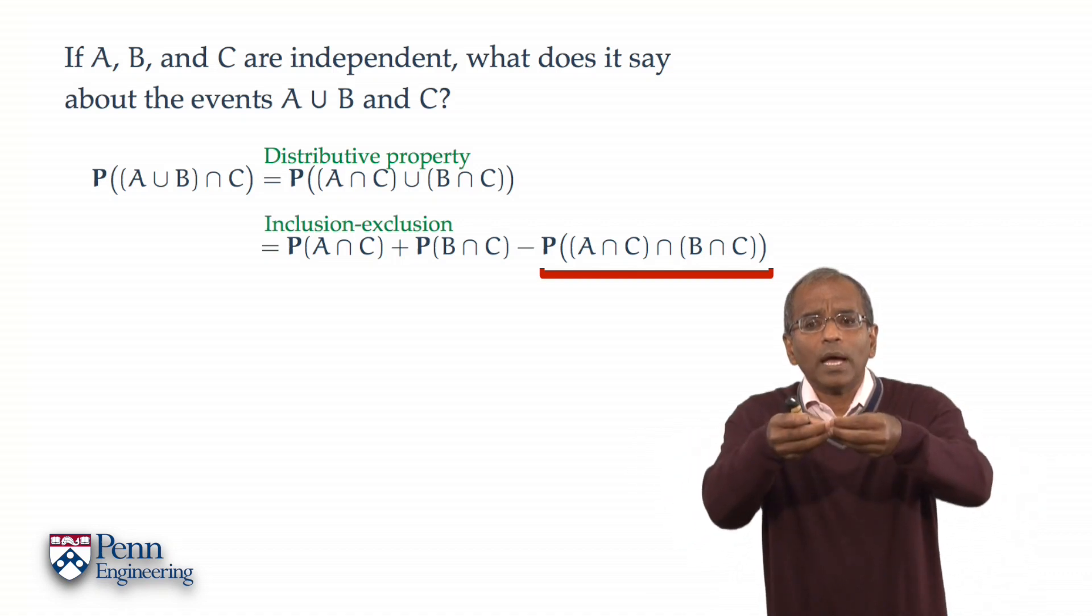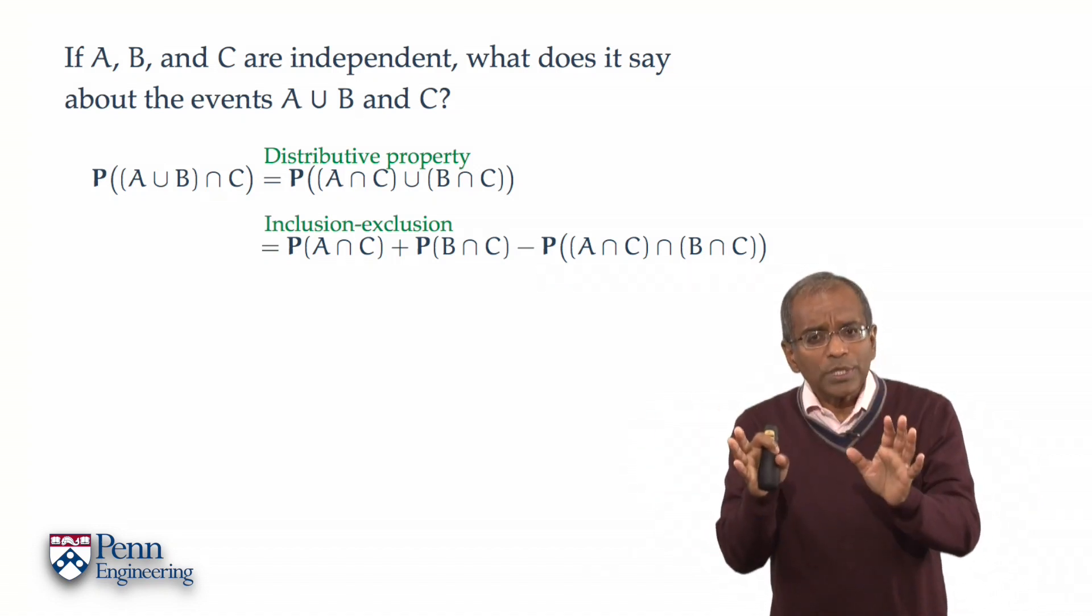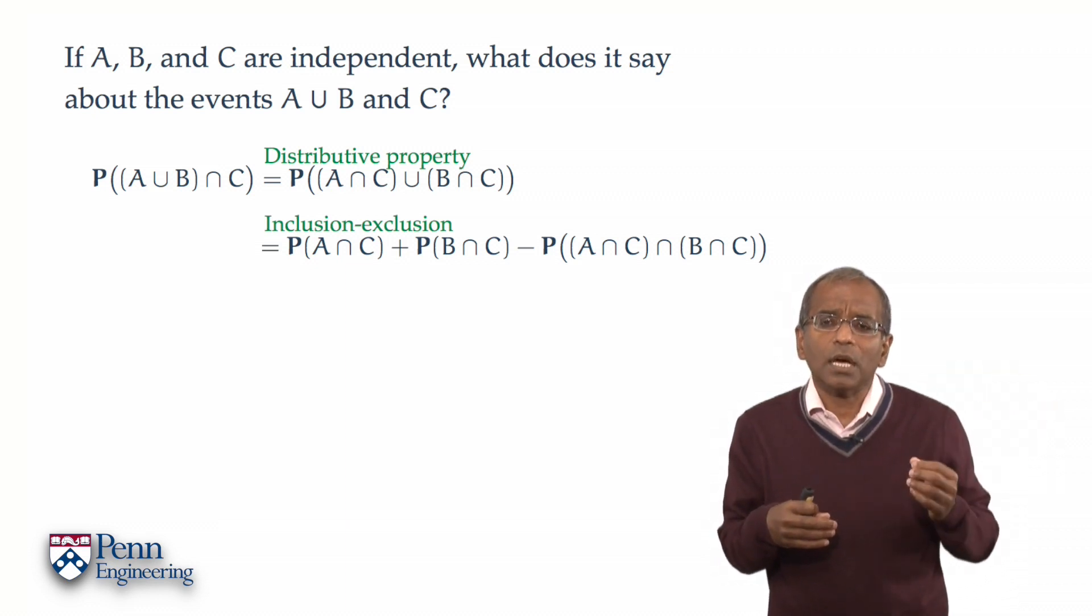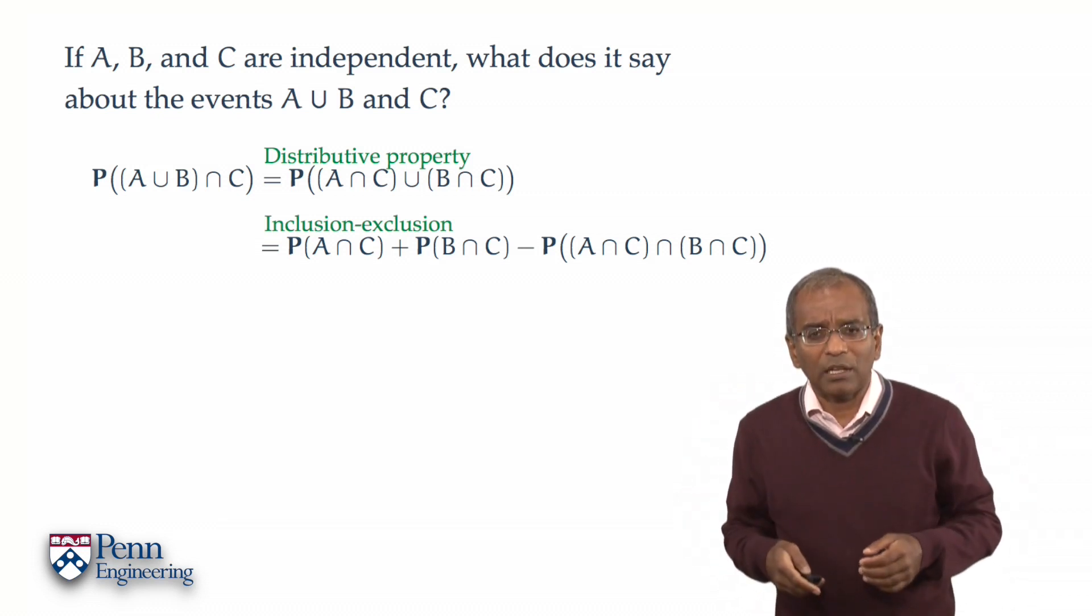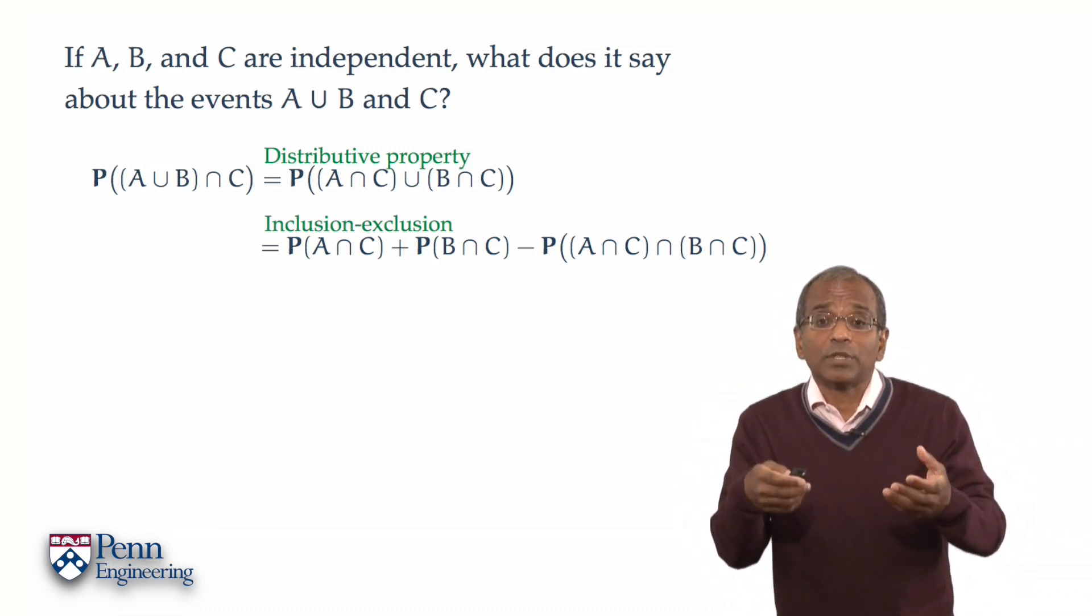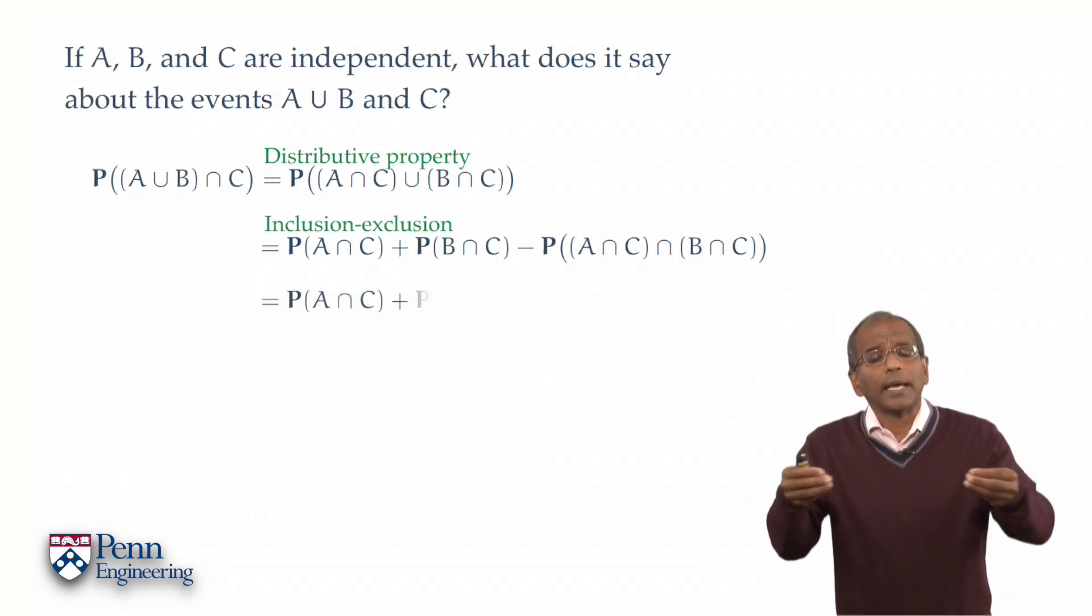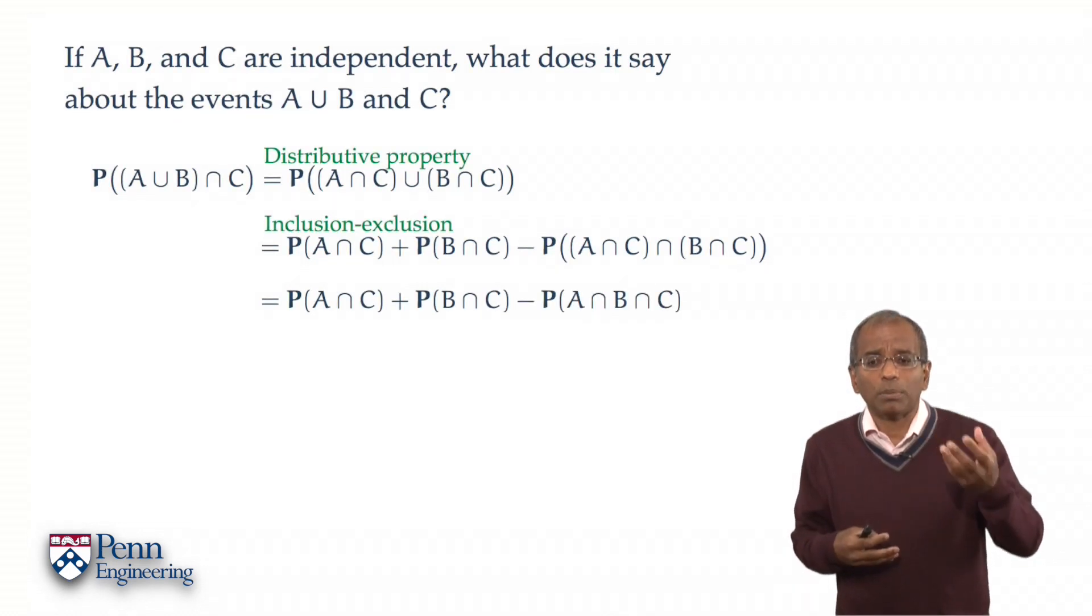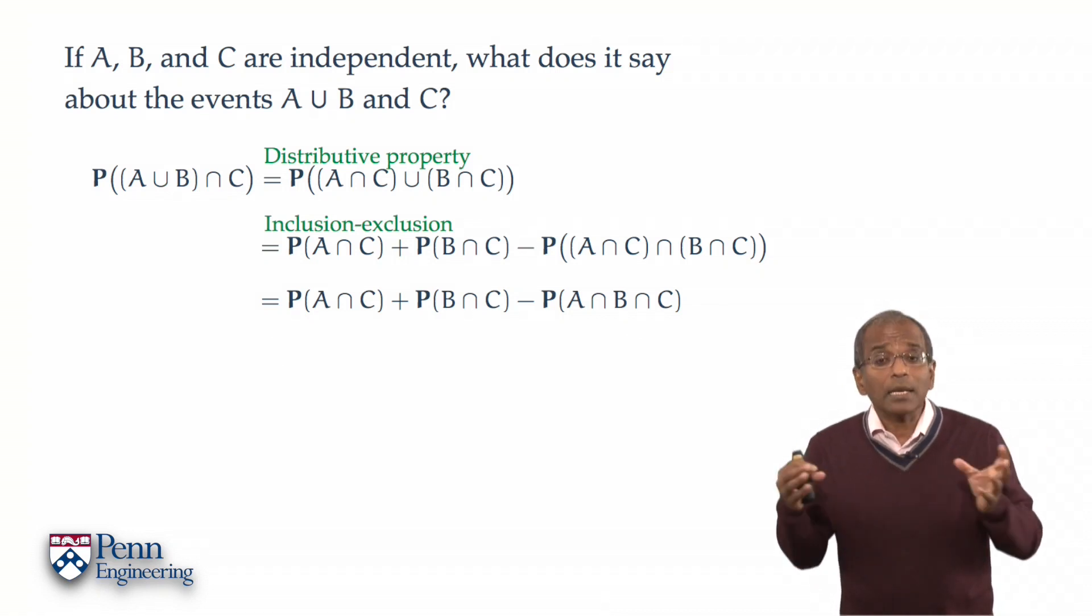And therefore, we now have an identity on the right. The first two terms involve intersections, and the third term also involves an intersection, but C appears twice. We should do a little algebraic cleaning, since the intersection of a set with itself is itself. So we obtain now a simple identity. The probability of A intersection C, added to the probability of B intersection C, from which you take away the probability of A intersection B intersection C. And now, things are ripe for independence.